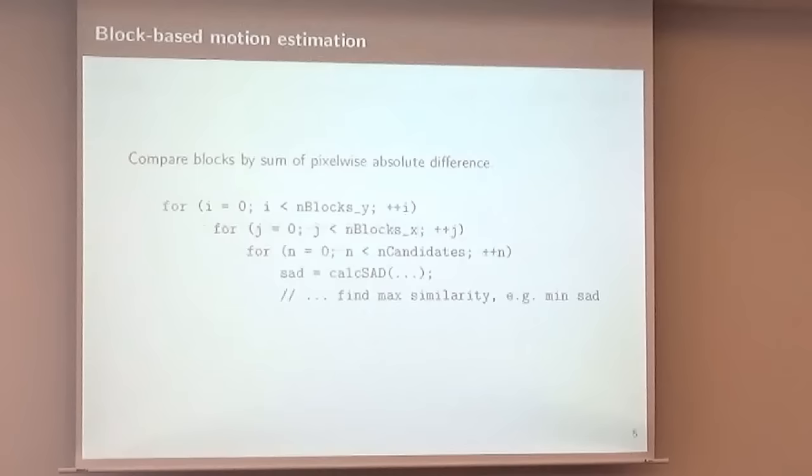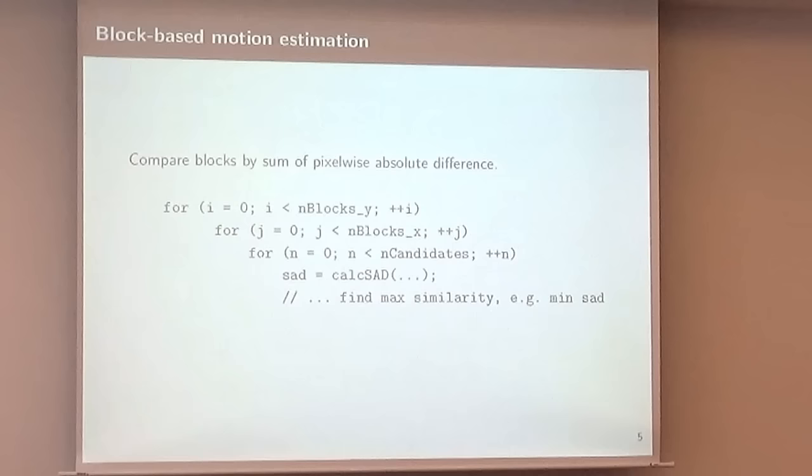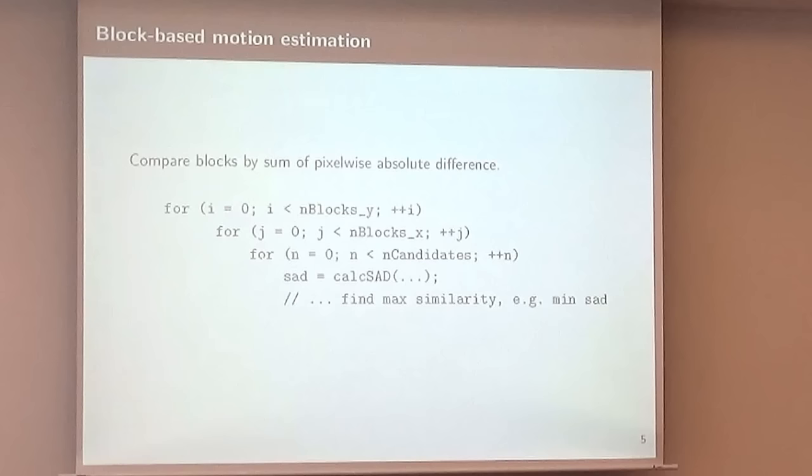As you might see from this triple nested for loop, this is the performance critical part. You might want to spend a lot of effort to optimize essentially this function to do this in minimum time, as it's called a lot of times per frame.